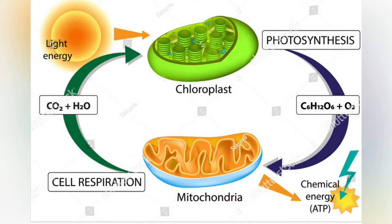Methods also exist to separate chlorophyll A and chlorophyll B. In diethyl ether, chlorophyll A has approximate absorbance maxima of 430 nm and 662 nm, while chlorophyll B has approximate maxima of 453 nm and 642 nm.